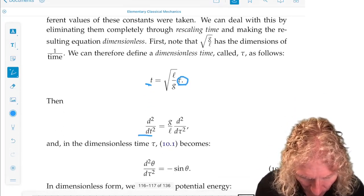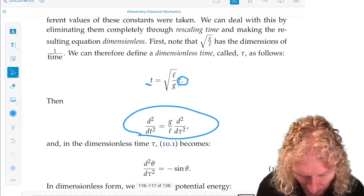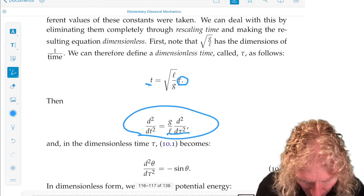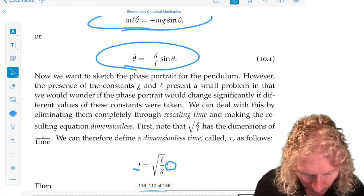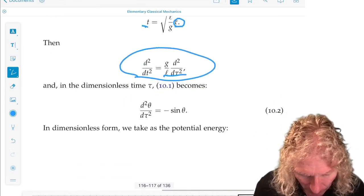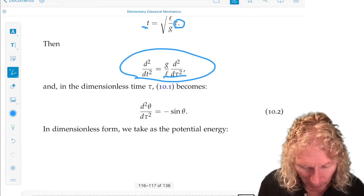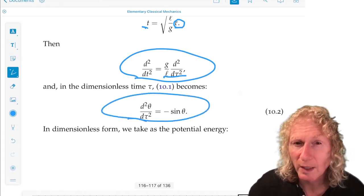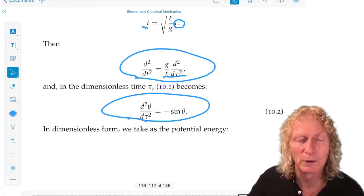In this new time, the second derivative with respect to t twice is given by this expression. Rewriting the second derivative above in the rescale time, we see that we've gotten rid of the minus g over L.